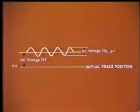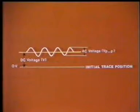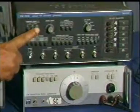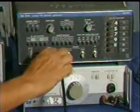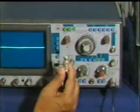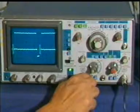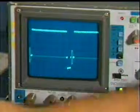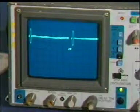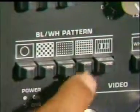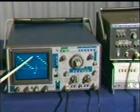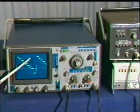Similarly, DC voltage can be measured by measuring the shift of the trace with respect to the original position. The voltage of different types of wave shapes can also be measured in a similar way by counting volt/division position, number of squares in the vertical scale, and noting the probe attenuation factor.